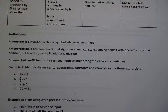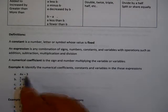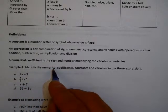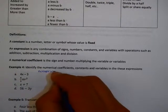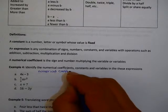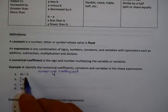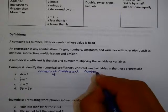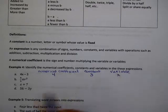Let's look at an example. The expression 4x − 3 means 4 times x subtract 3. The numerical coefficient is 4, the constant is 3, and the variable is x.